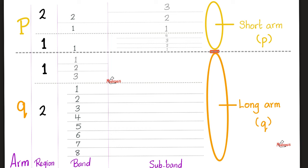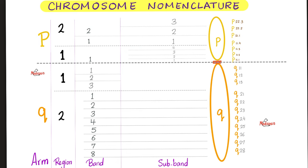Then each band is subdivided into subbands. For example, band number one on region one on the short arm has one, two, three, four subbands. How about region two? Well, region two has only three subbands, as you see. And then you give each one a name or a number.